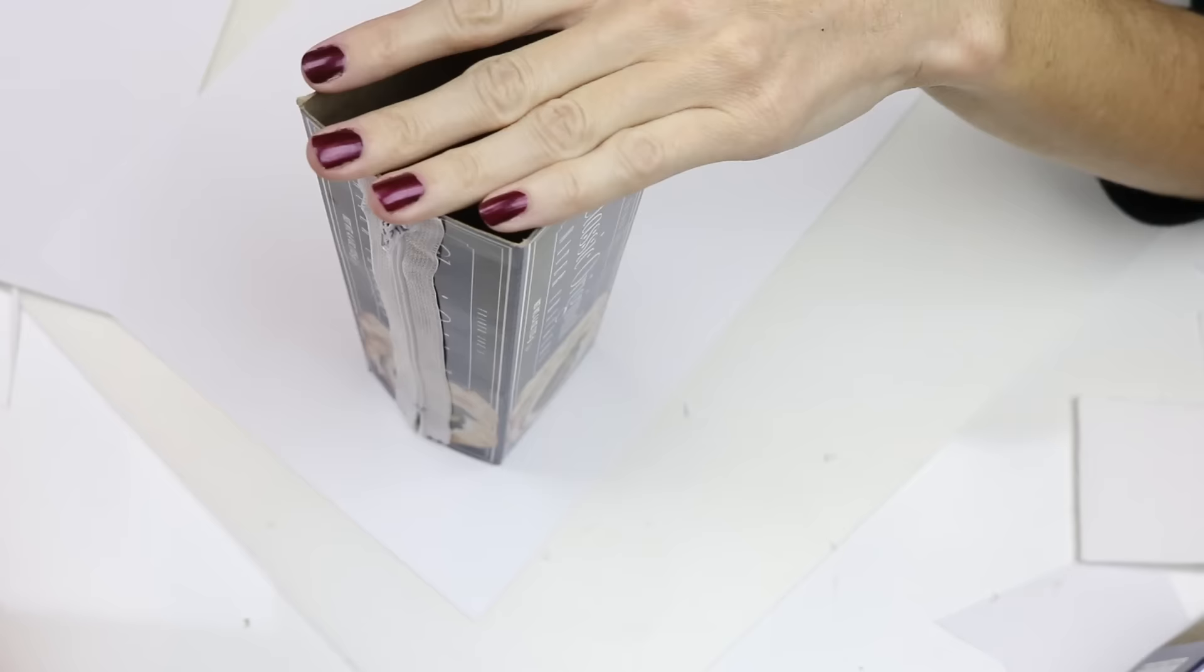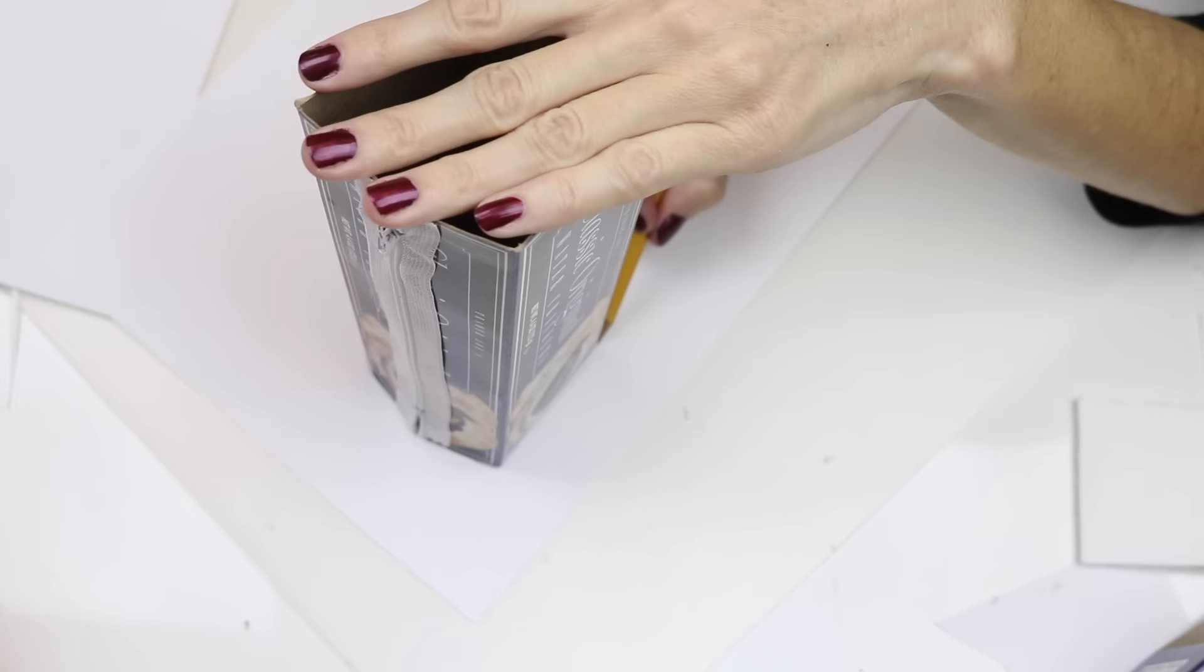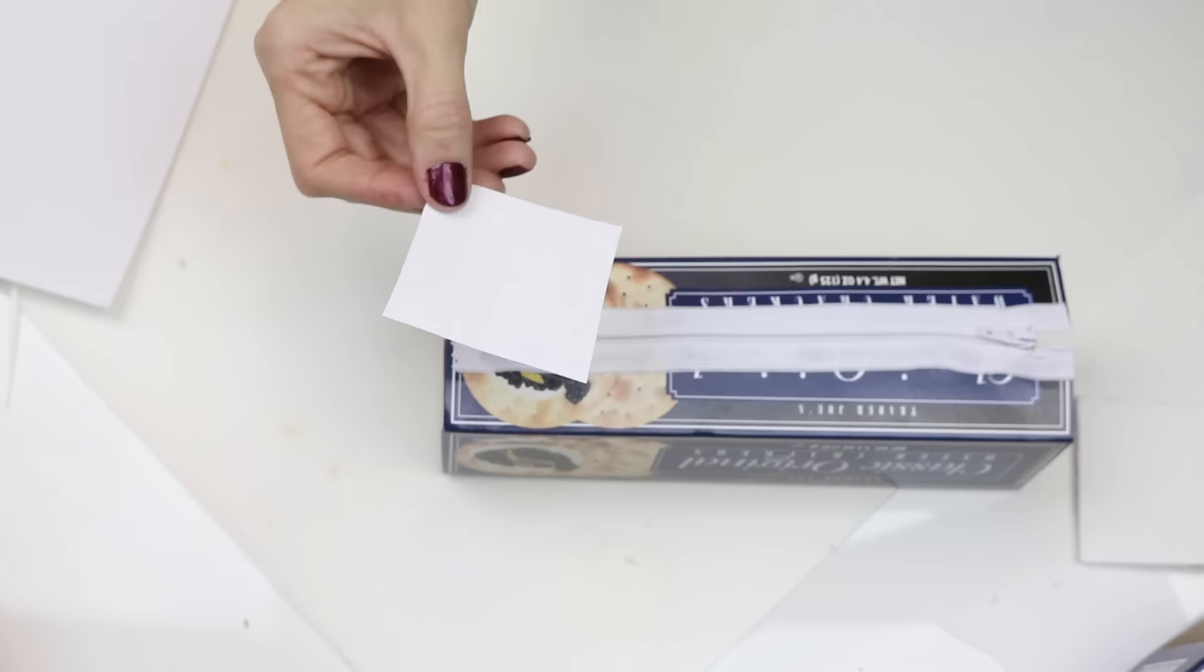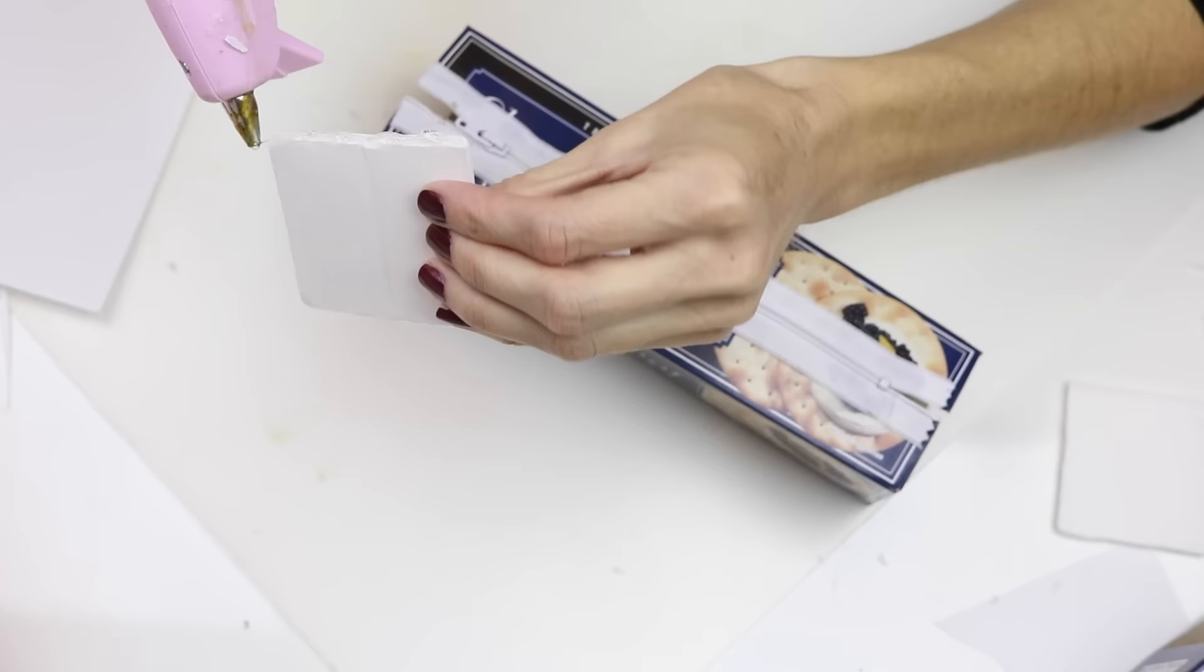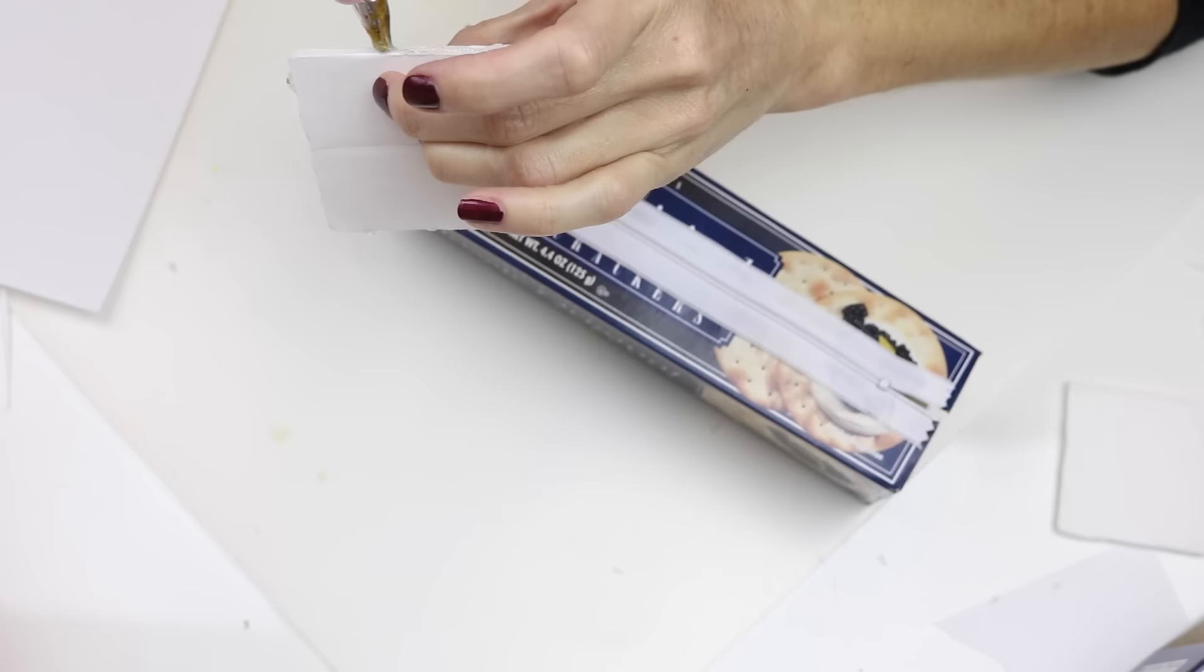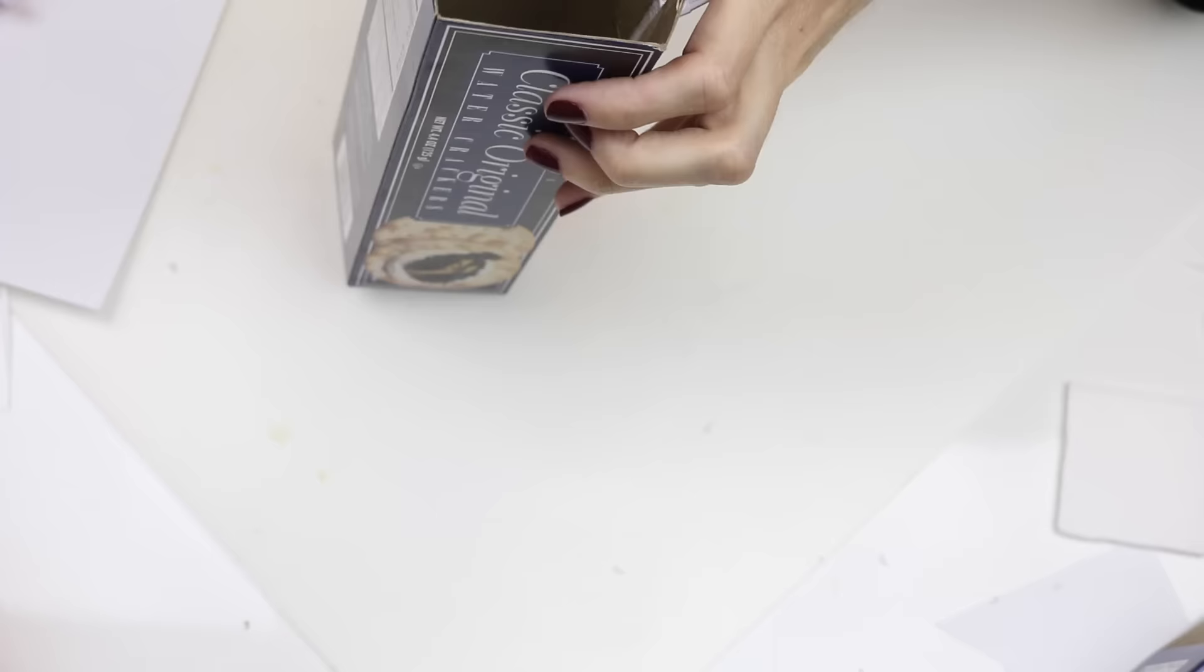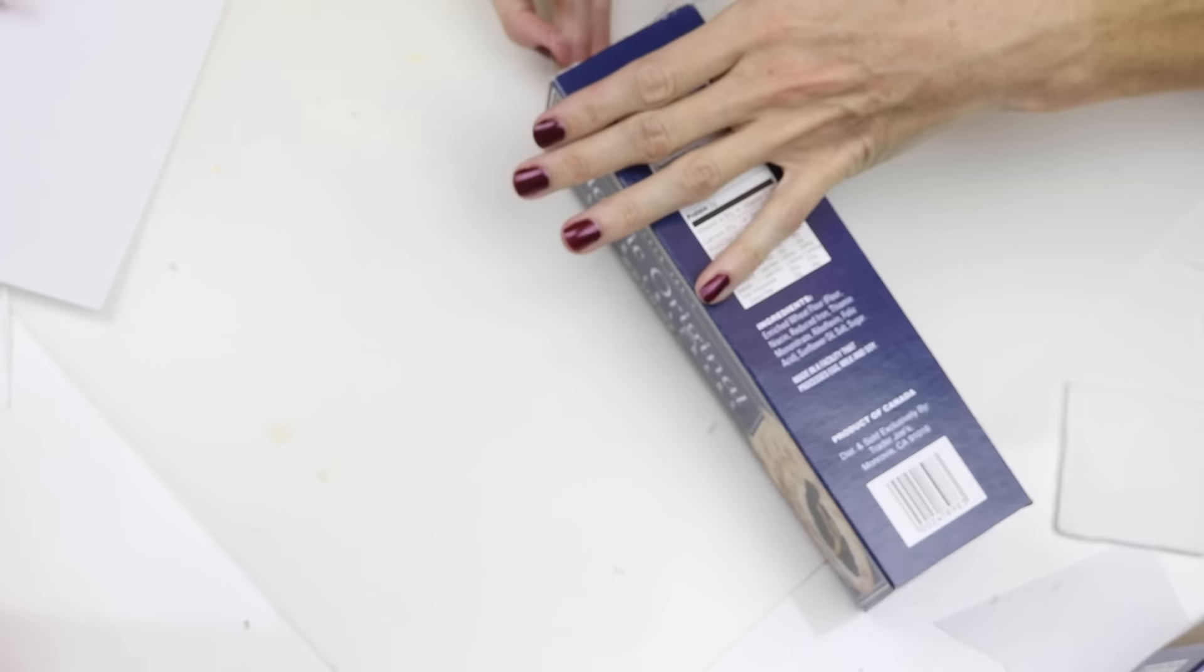Then I just traced around the box onto a piece of white paper, cut that out, then I cut out a piece of foam board from that. I hot glued around the foam board and stuck that into the end of the box. I did this for both sides.